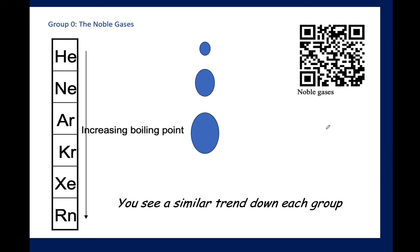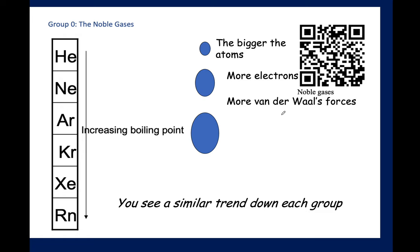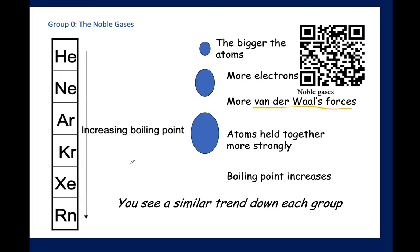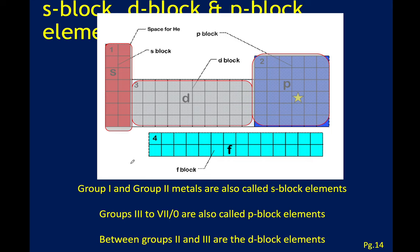Noble gases are chemically unreactive because they have full outer shells. As you go down the group their boiling points increase, which relates to the size of their atoms — bigger atoms have more electrons and stronger van der Waals forces. We will learn about van der Waals forces in more detail in question 5 content. The more van der Waals forces present, the higher the boiling point — krypton atoms, for example, are more attracted to each other because of this.